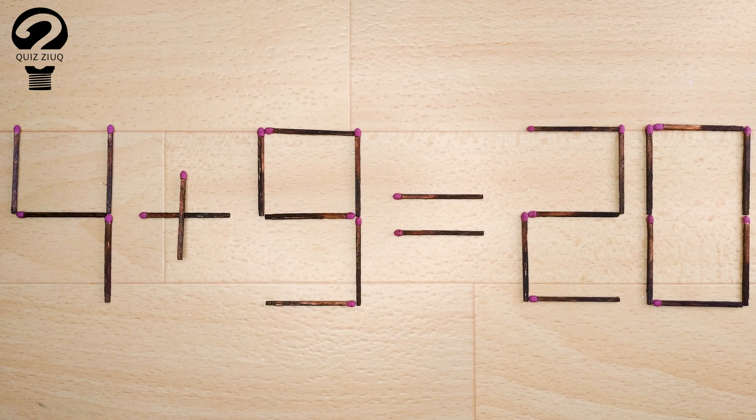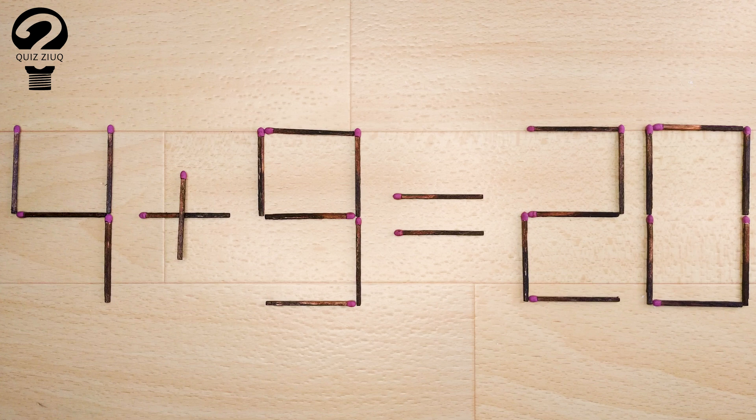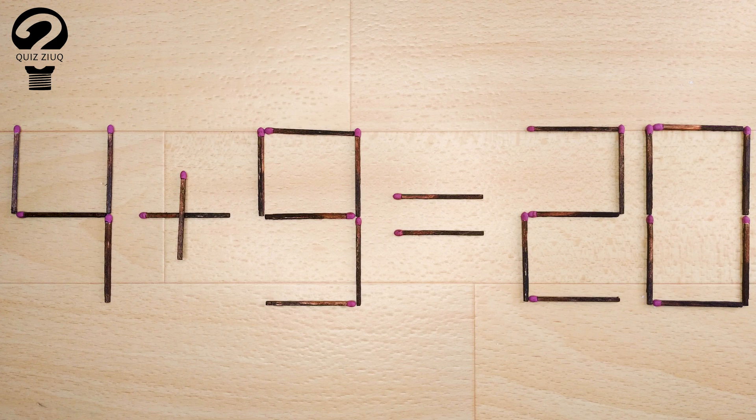Here's the next puzzle. We have the following equation: 4 plus 9 equals 20. Our equation is incorrect. We need to move one matchstick to make our equation correct.